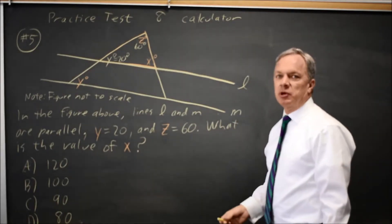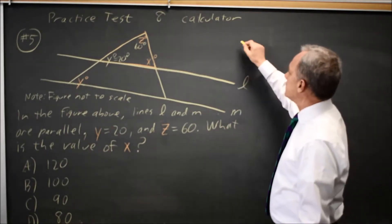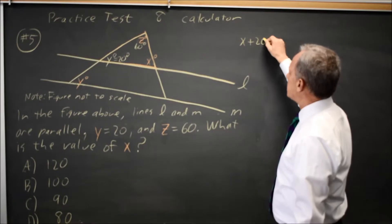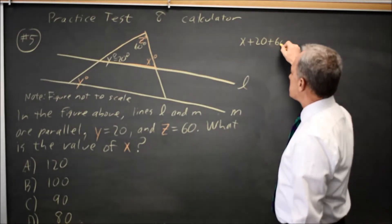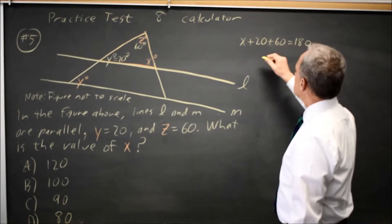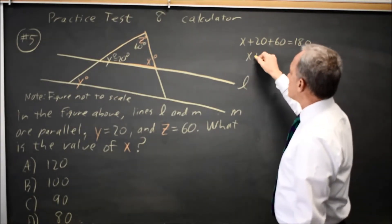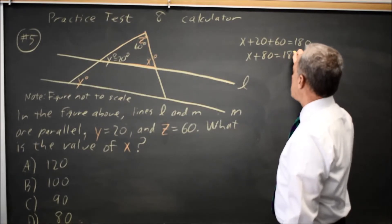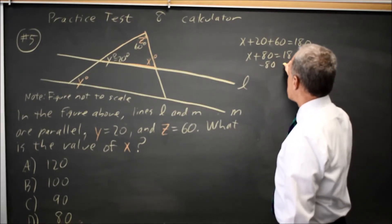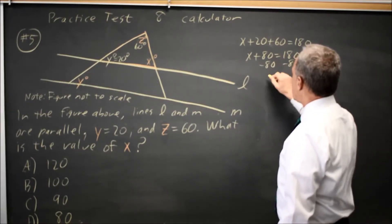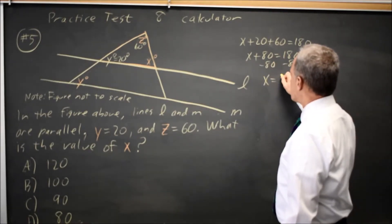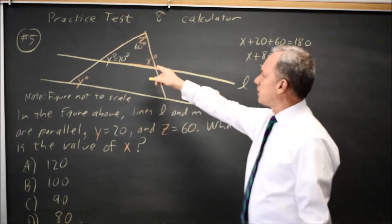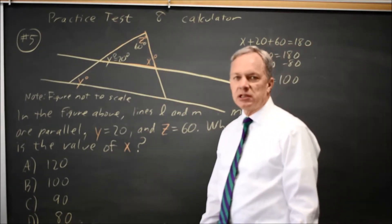The angles of a triangle add up to 180 degrees, so X plus 20 plus 60 equals 180. X plus 80 equals 180. Subtract 80 from both sides and X equals 100. The angle at X is 100 degrees.